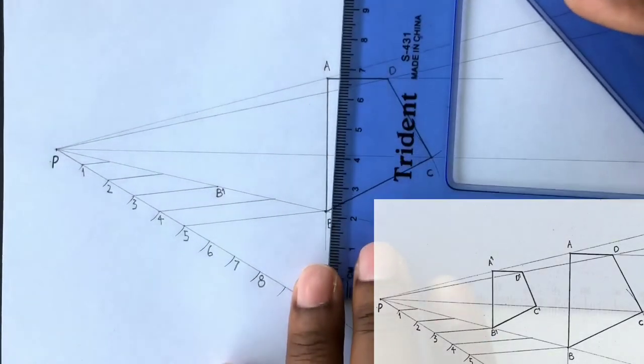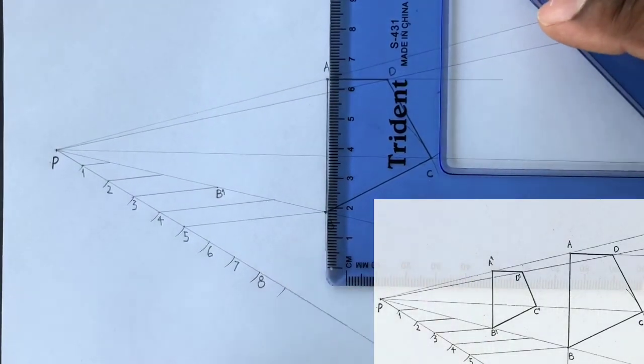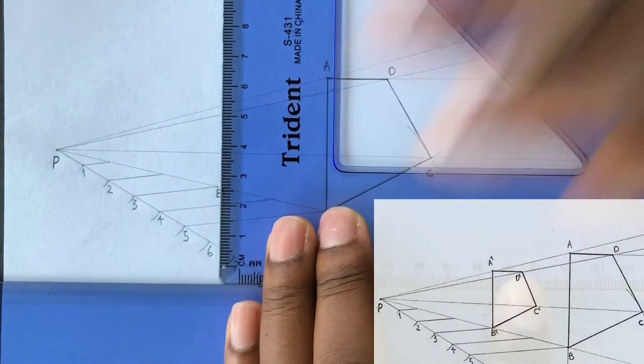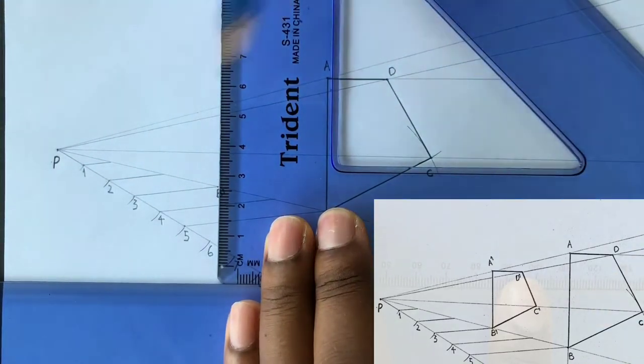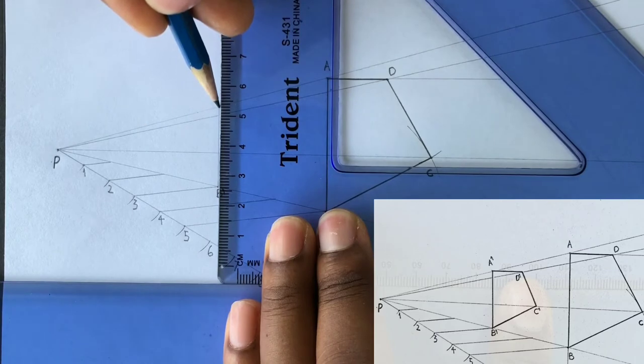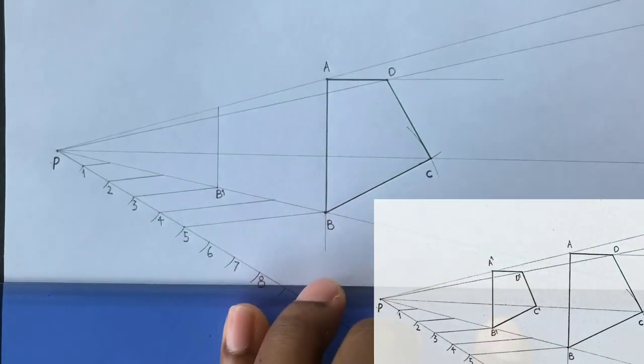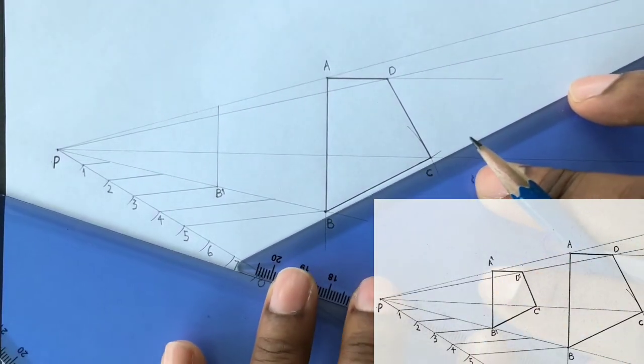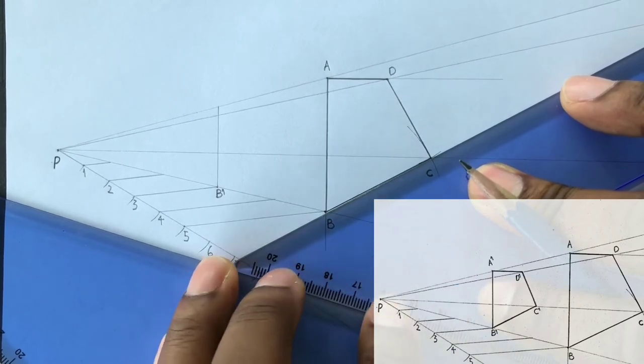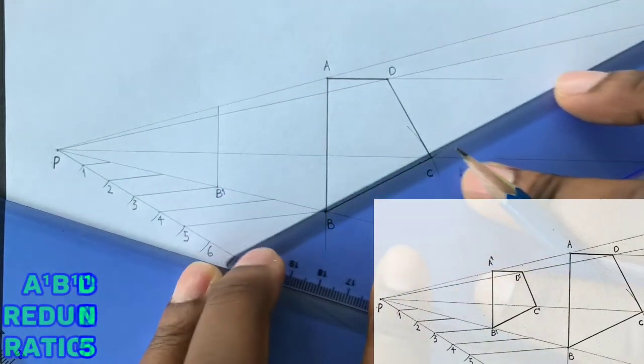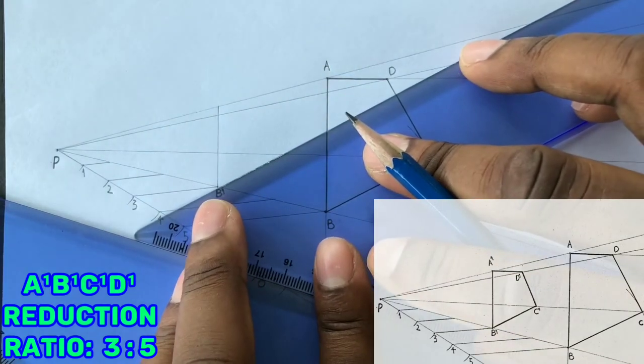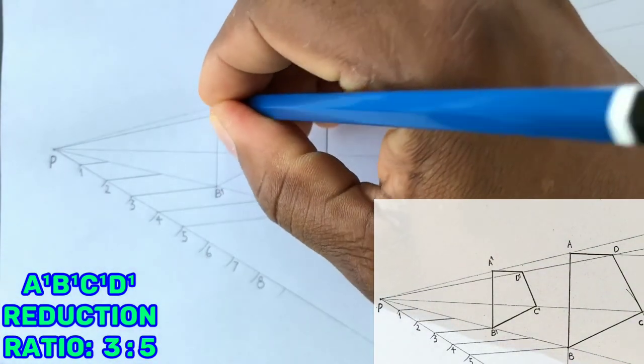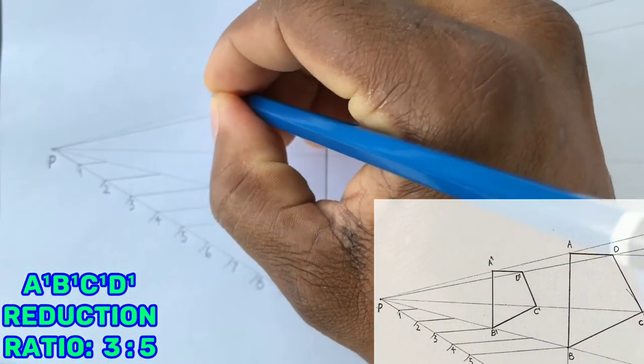Now draw a parallel line to line AB from point B1. Use your two set squares to do so. To the line BC, draw a parallel line at point B1 to this line. Now label the intersections of the two previous lines as A1 and C1 respectively.